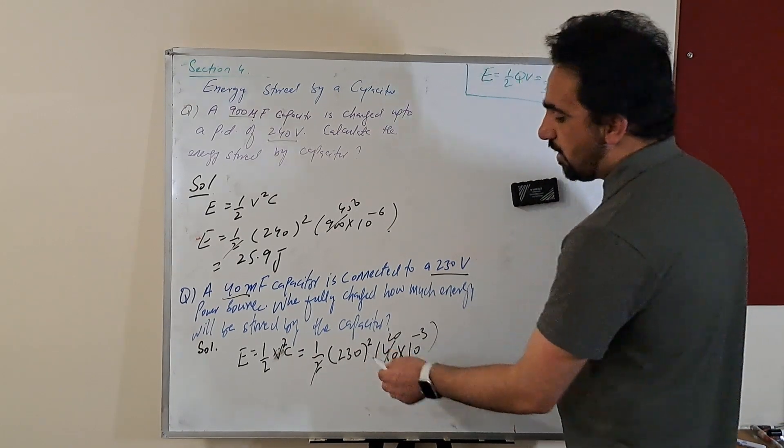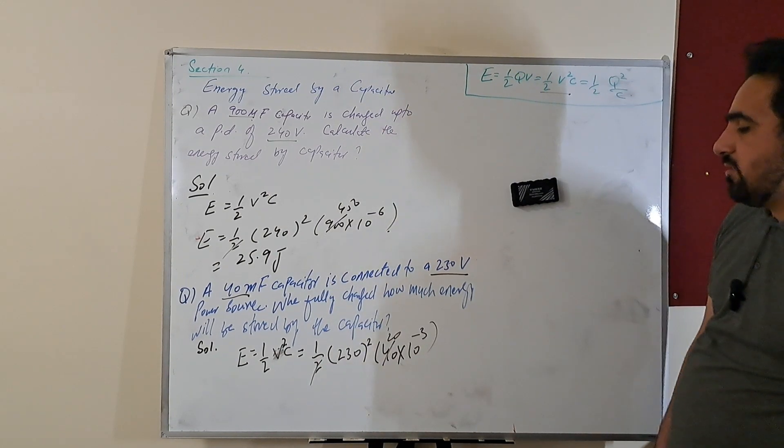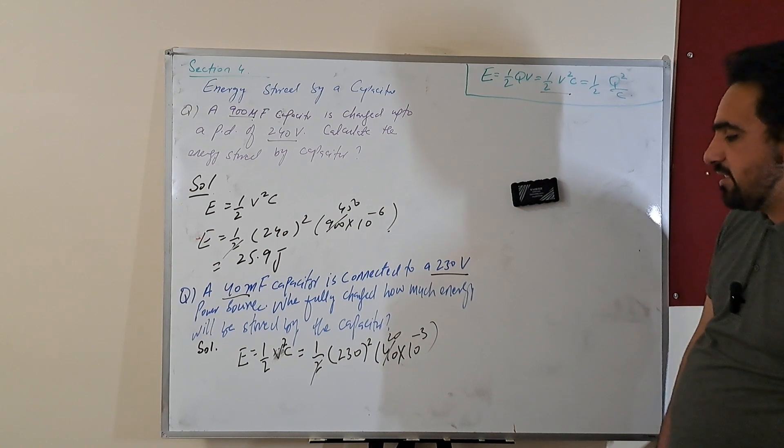2 ones are 2, so 20, and we got 230 squared multiplied by 20 and then 10 to the power minus 3.